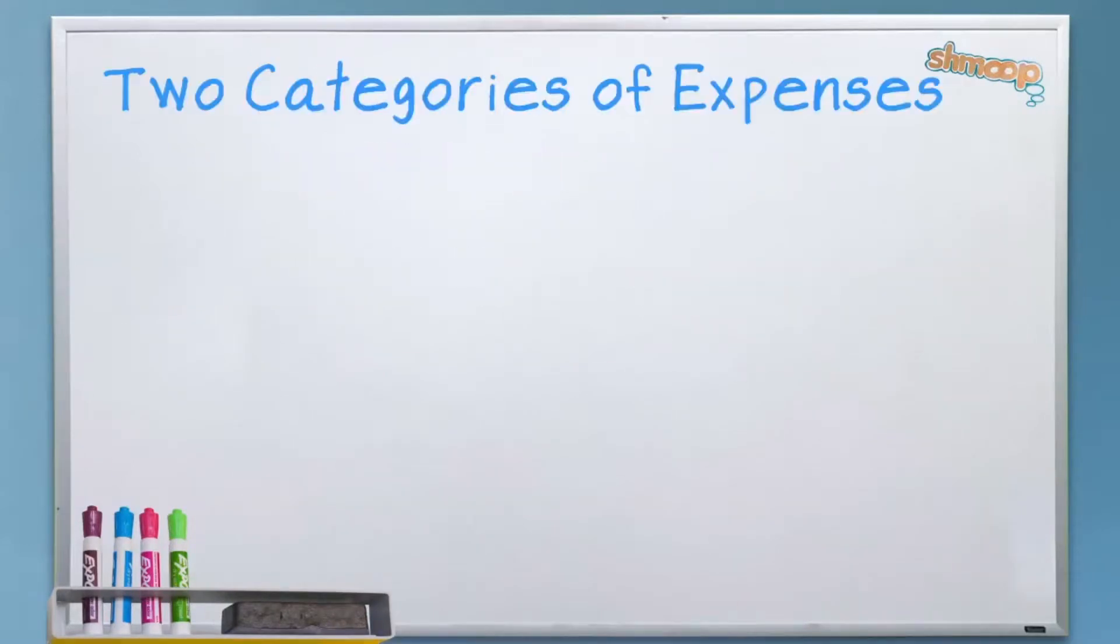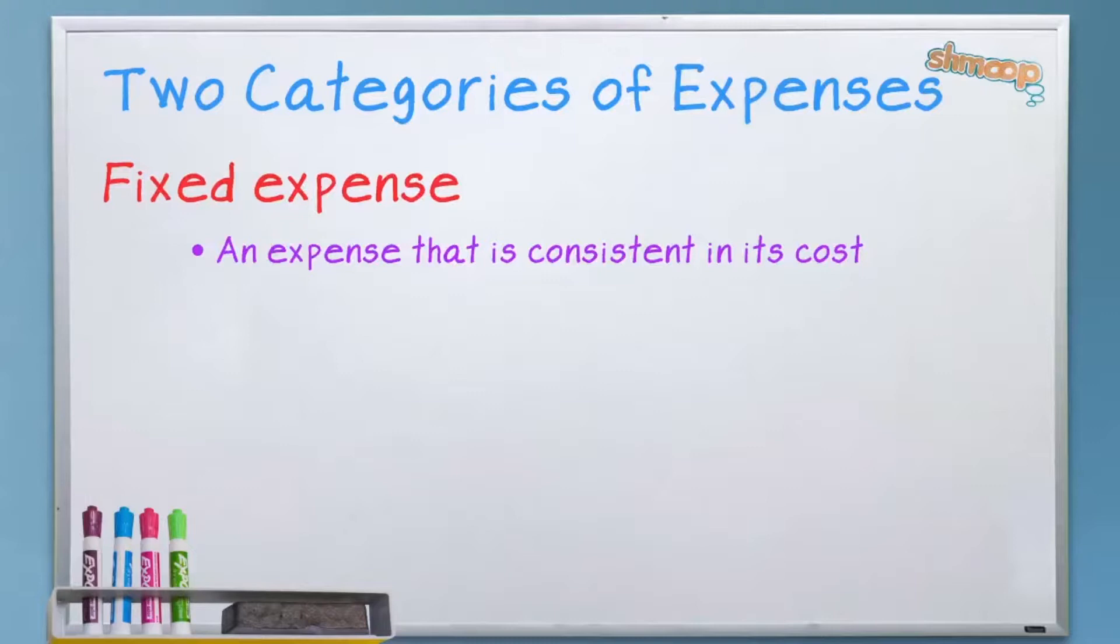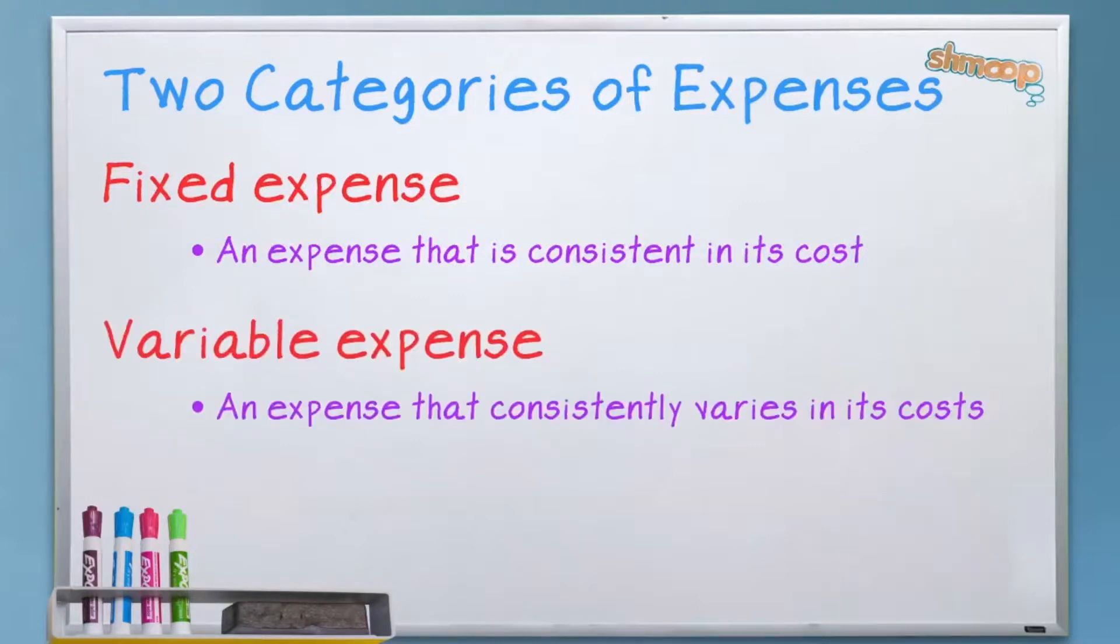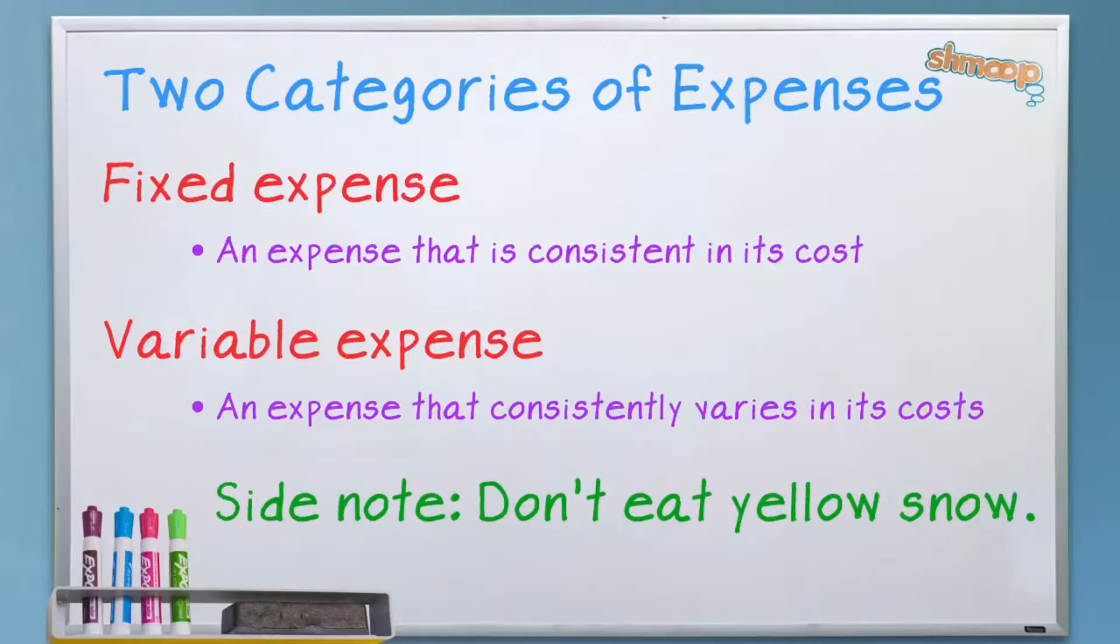All of that noted, expenses break down into two key categories as you run a business: fixed, things like rent and insurance and that drinking cooler thing with the huge plastic bubbles of water, and variable, like lemons. Hot month, tons of traffic to the stores, lots of lemons. Snow months, not so many lemons. It'll vary.